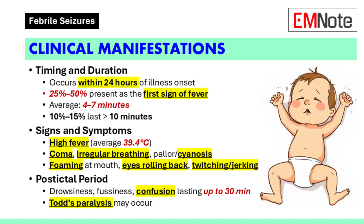Febrile seizures typically occur within the first 24 hours of an illness, often within one hour of fever onset. In 25% to 50% of cases, the seizure is the first sign of a febrile illness. The average duration is 4 to 7 minutes, with only 10% to 15% lasting longer than 10 minutes. Patients typically have a high fever, with an average of 39.4 degrees Celsius in one study.